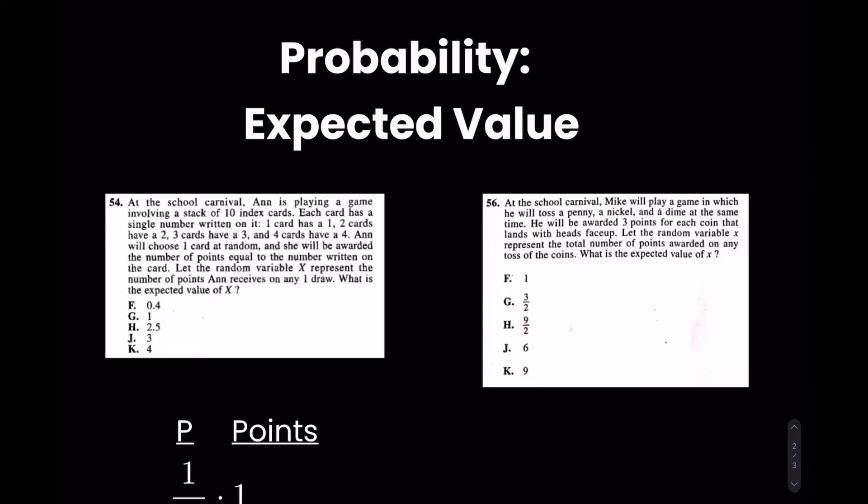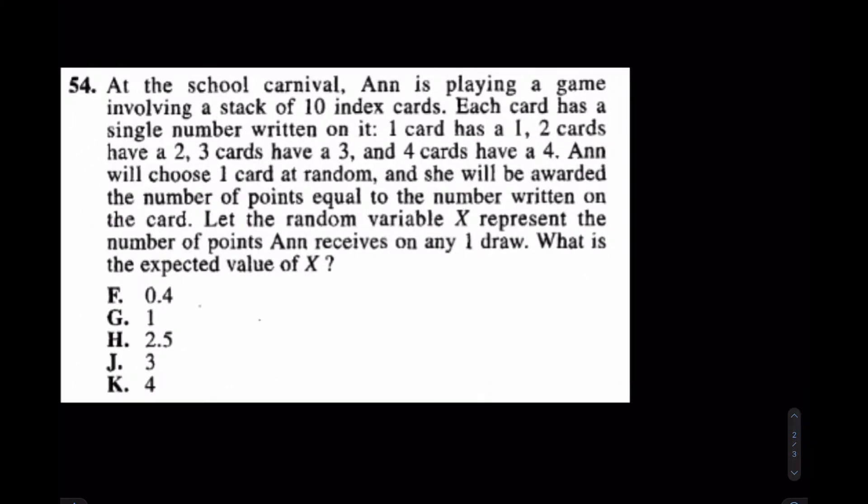Hey guys, we're back for another one. Today we're reviewing a probability idea from the ACT that only really shows up in the 50s, really the hardest questions on the ACT. The name of the skill is called expected value. Really, what value can you expect to score when you've played this game a million times? Let me show you what I mean.